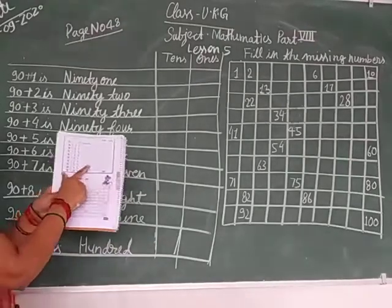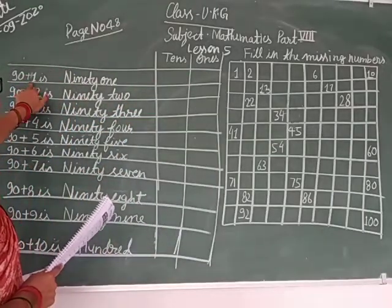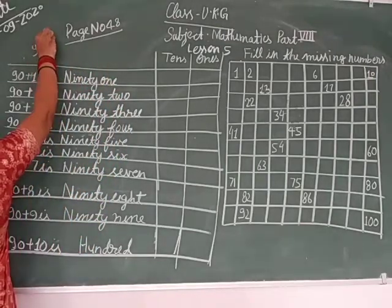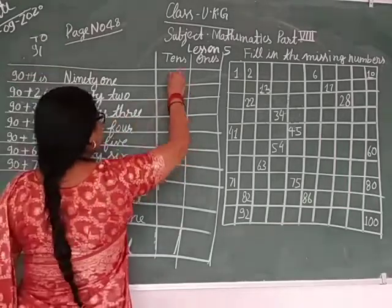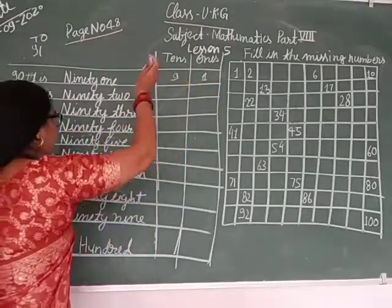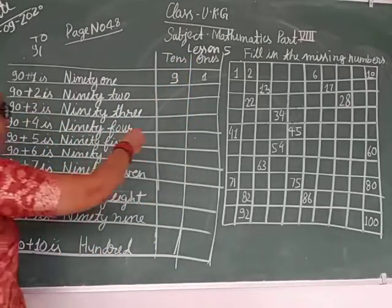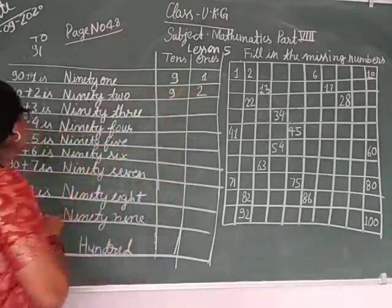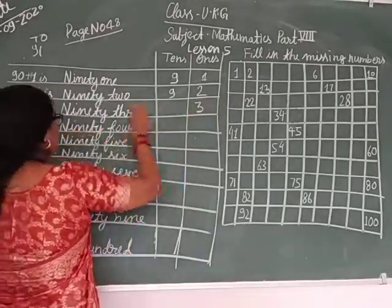Now please go. 91. 90 plus 1. 1 is the ones and 9 is the tens. 92. 2 is the ones and 9 is the tens. Next is 93. 3 is the ones and 9 is the tens.